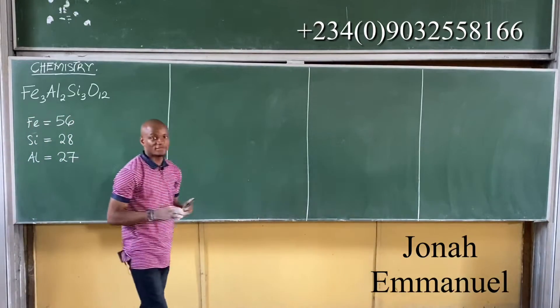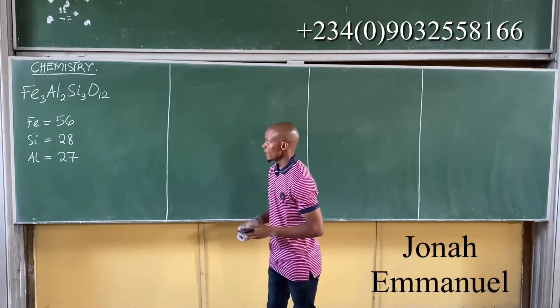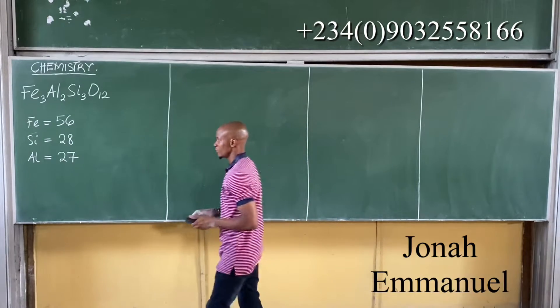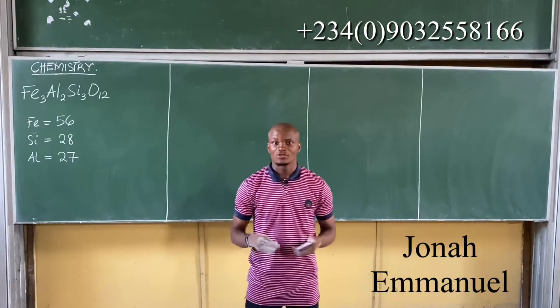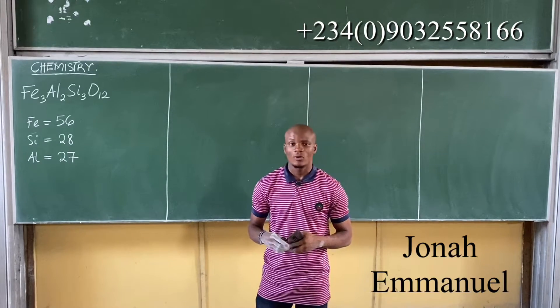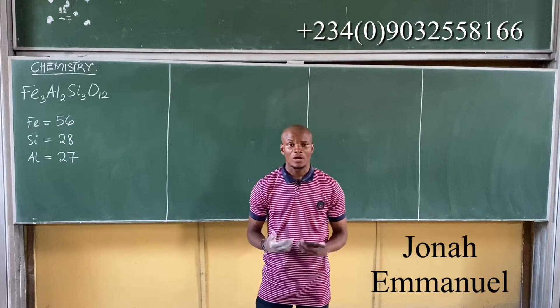So you have these as the different atomic masses. It is said that the percentage composition of silicon is about 13.8%. Show by calculation whether it is consistent with the formula or not. So how do I solve this?